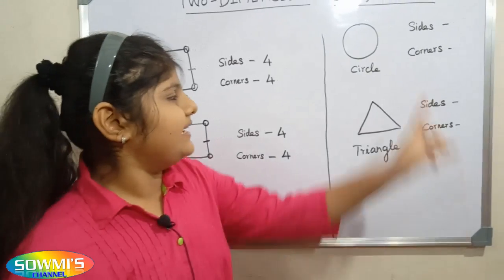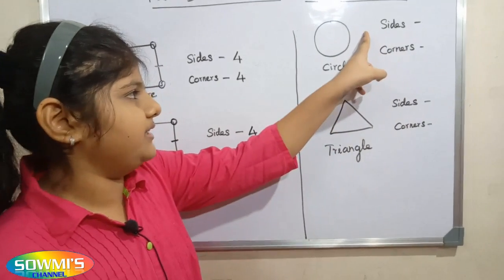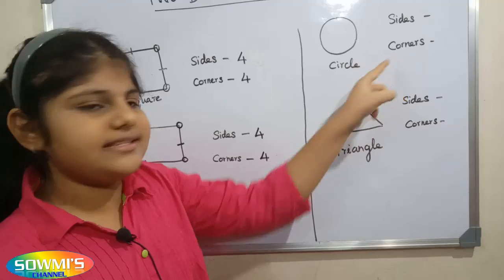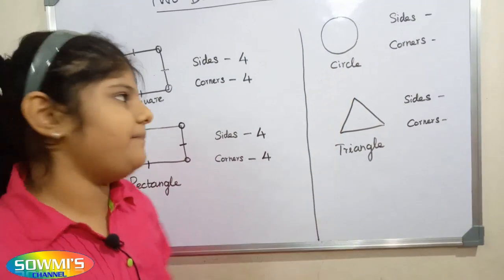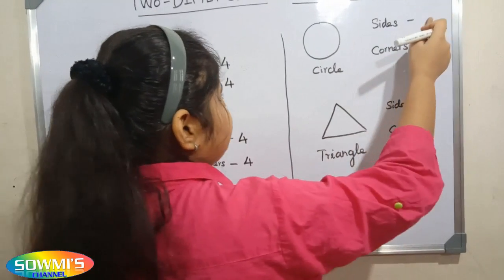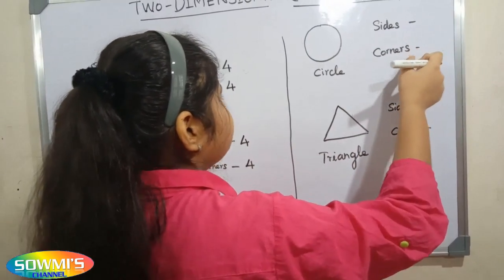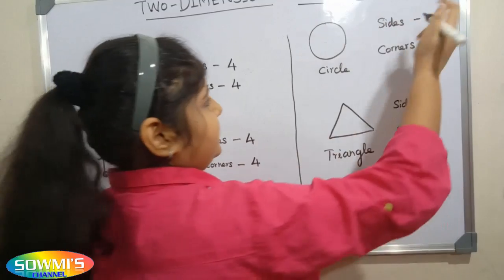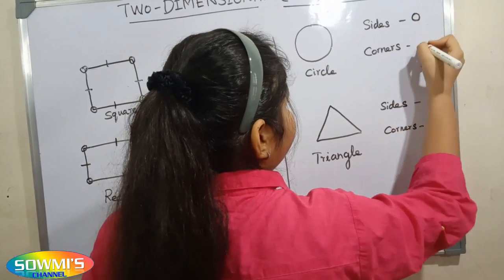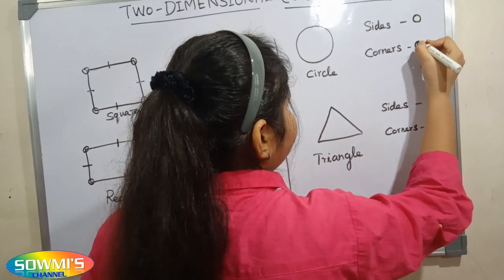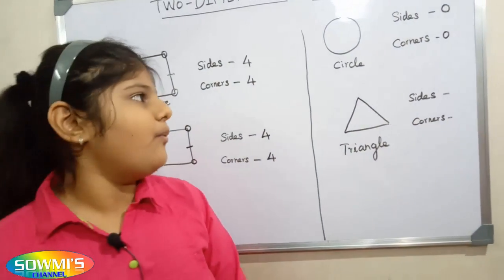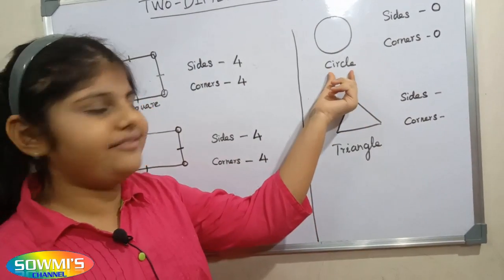Next we will count the sides and corners of a circle. There are no sides and corners in a circle — it has only a curved face.